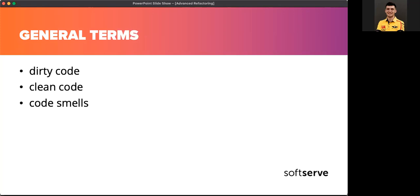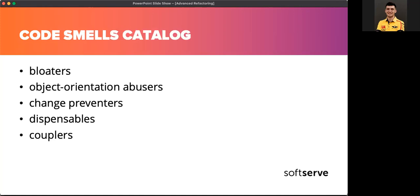Code smells are indicators of problems that can be solved during refactoring. Such problems are easy to spot and resolve, but they can only be symptoms that indicate significant global problems in the code. The code smells catalog is a collection of well-known anti-patterns which are the most common problems in code. Their description helps to identify weak areas in source code and provides common techniques to resolve those problems. Let's review some of them: bloaters are code, methods, and classes that have increased to such gargantuan proportions that they are hard to work with.